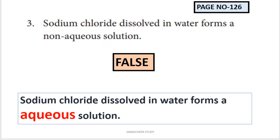True or false: sodium chloride dissolved in water forms a non-aqueous solution - this is FALSE. When sodium chloride is dissolved in water, water is the solvent, so it is an aqueous solution, not a non-aqueous solution.